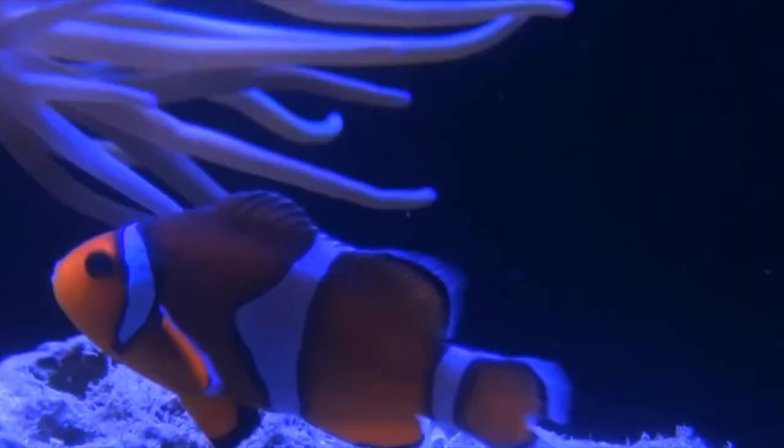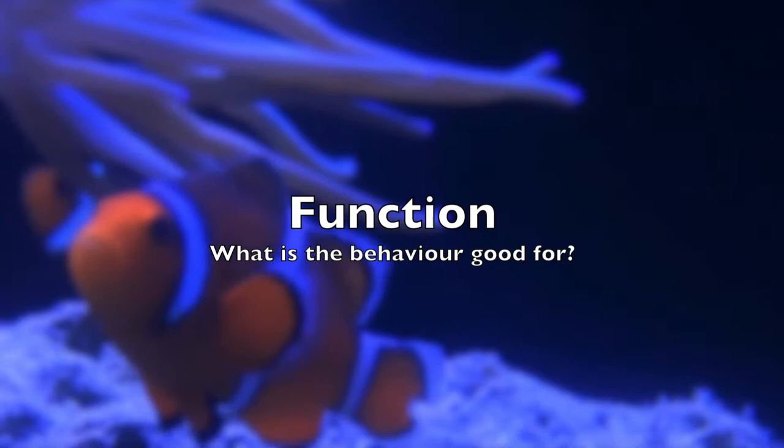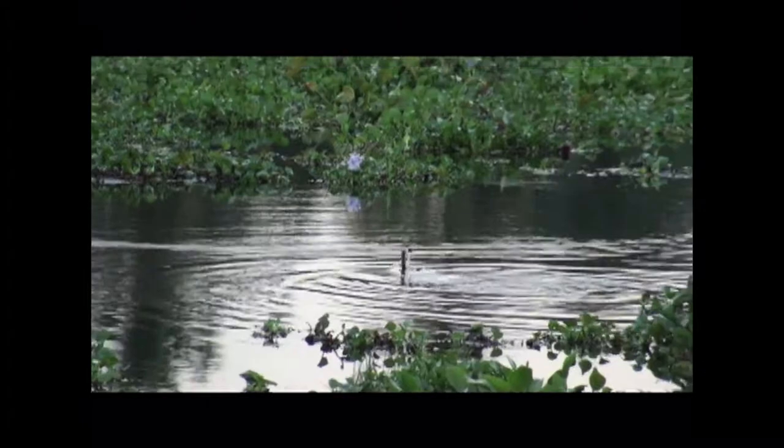The next category of the four whys is ultimate causes, which includes the function of the animal behaviour — what is the behaviour good for, such as what does it do for the animal, the adaptive value of this behaviour, and how its benefits outweigh the cost.